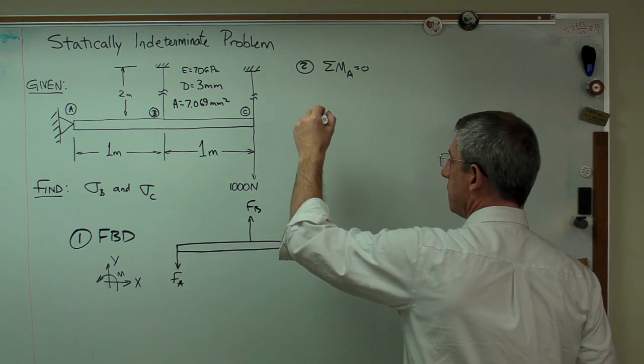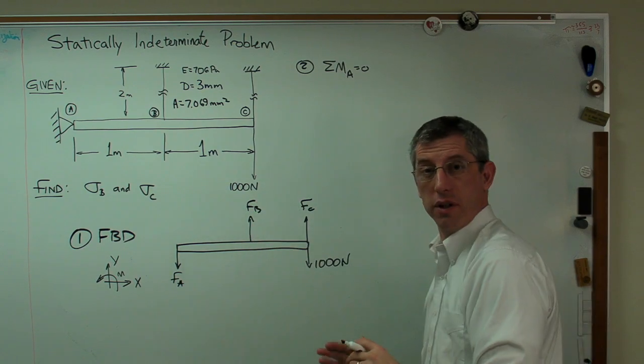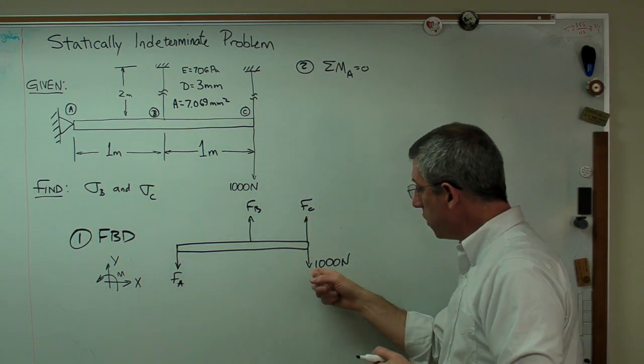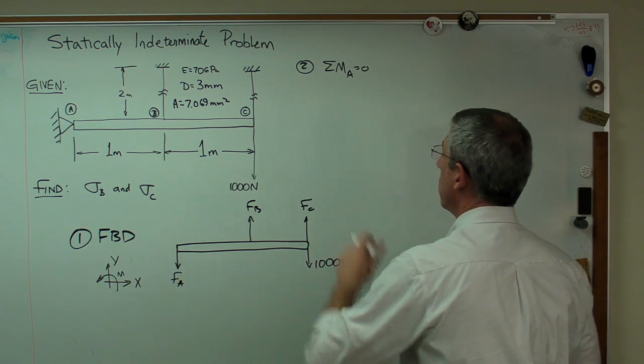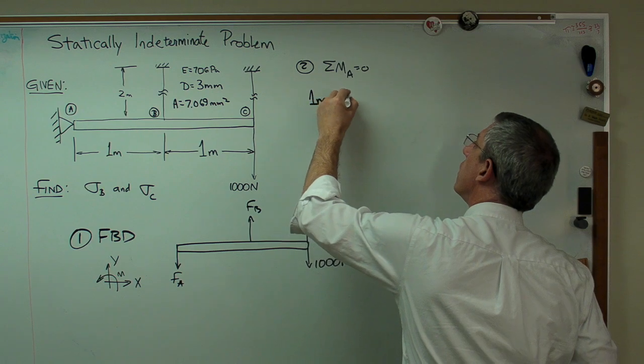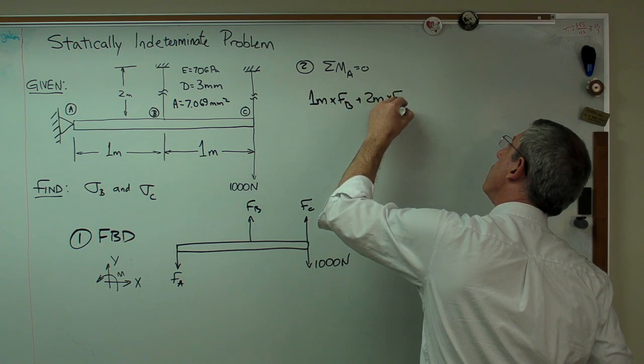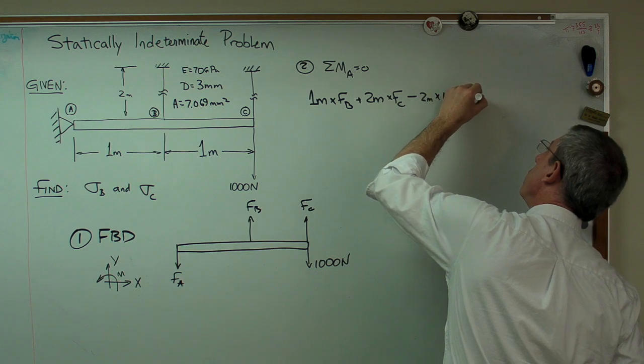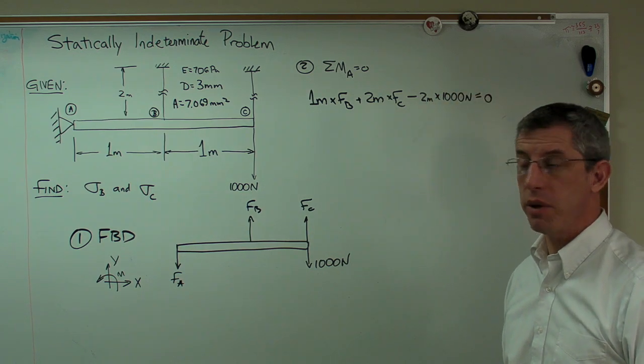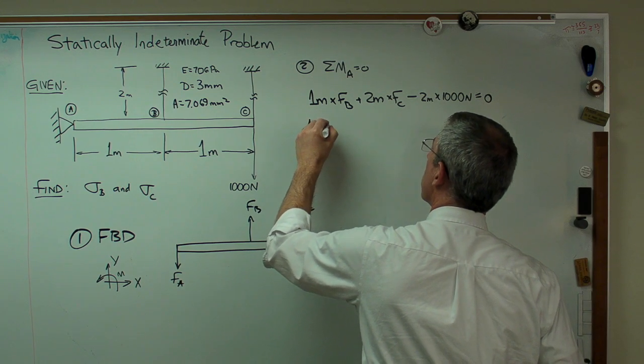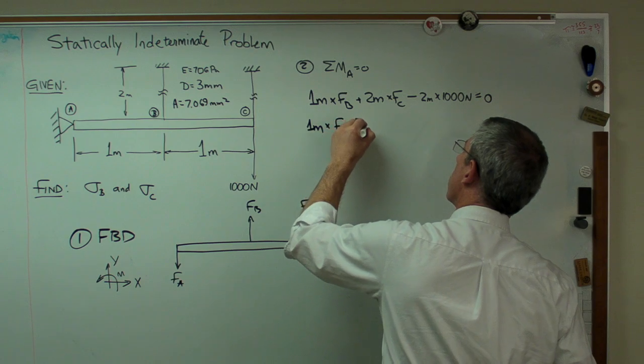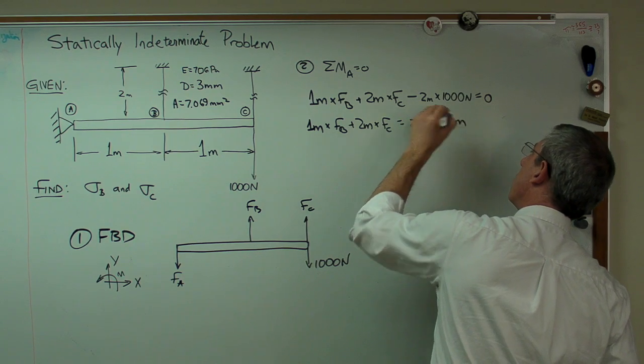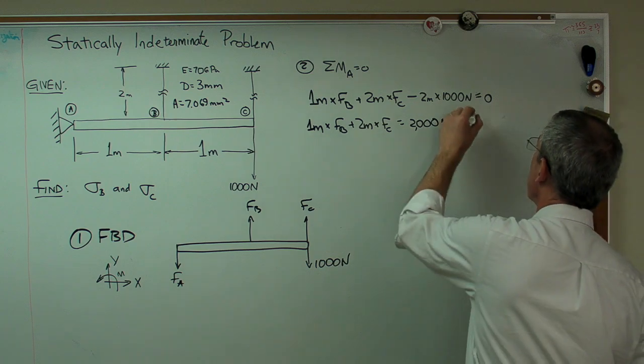Let's start writing this out now. The moment due to that force is going to be positive because it goes in the positive direction. The moment due to Fc is going to be positive. The moment due to this is going to be negative. So let's write those out. One meter times Fb plus two meters times Fc minus two meters times 1,000 newtons equals zero. Sum of the moments is zero. Let's clean that up just a little bit. There's the first equation that we're going to need.